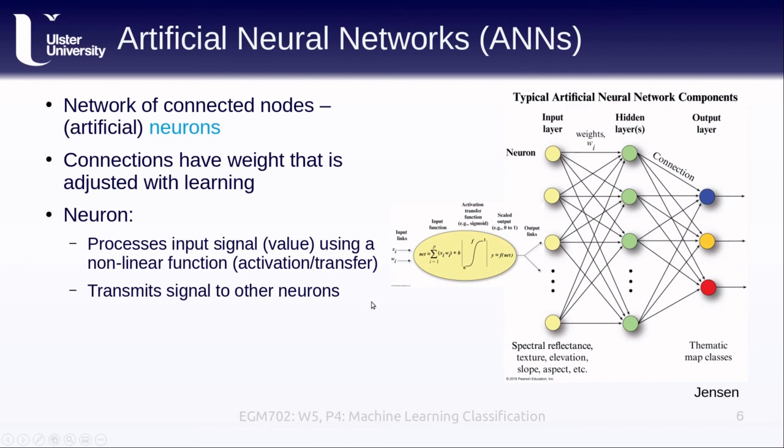Once the neuron transmits the signal to other neurons, they can move on to the next layers in our network, and eventually from our initial inputs we have outputs that are, in the remote sensing case, thematic map classes, so we get a classified map out of this.